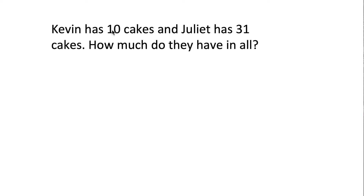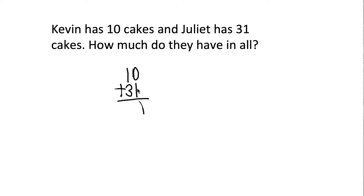Now we have to add the 10 cakes — the number of cakes Kevin has — and 31 cakes, the number of cakes Juliet has. So let's write it down: 10 plus 31. We add from the ones side: 0 plus 1 is 1. And 1 plus 3 is 4. So the answer is 41 cakes.